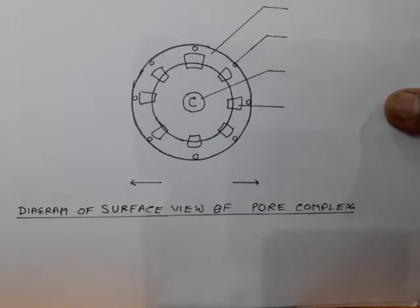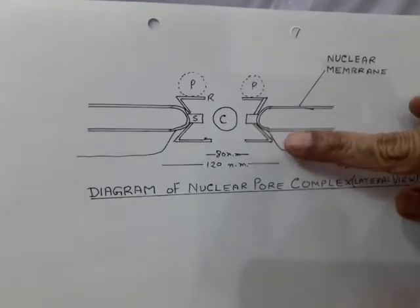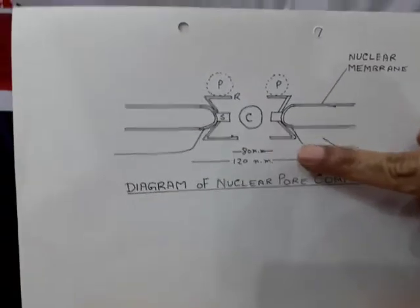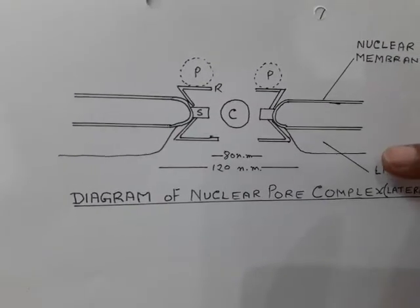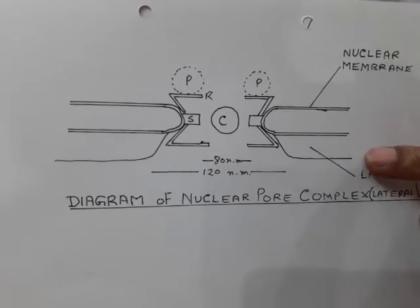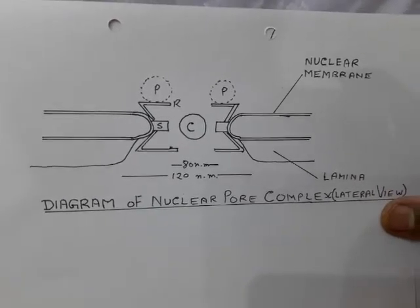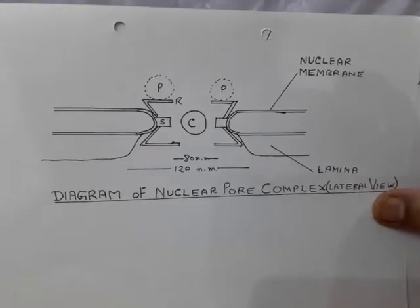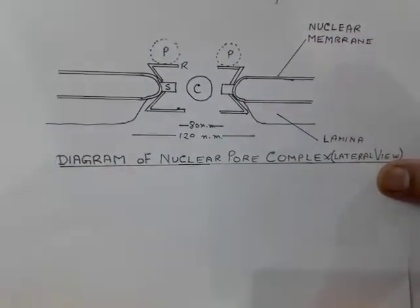When we observe it from the lateral side, we can see the central plug and on two sides the upper annulus and lower annulus — the space is 80 nanometers. The two nuclear membranes, and in between them there is one more membrane called the nuclear lamina, where chromatin threads attach and sometimes particles may be found at the surface. This is the nuclear pore complex.